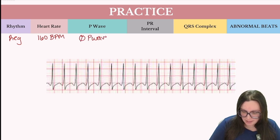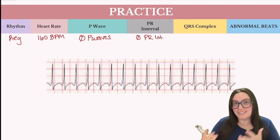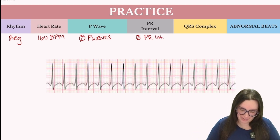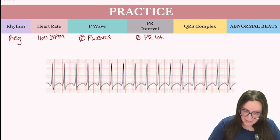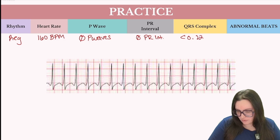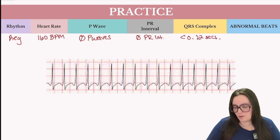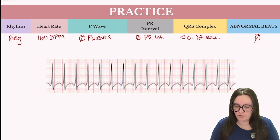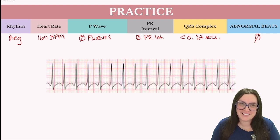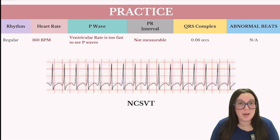Because we don't have P waves, we're also not going to be able to measure our PR interval. Is our QRS complex narrow and normal, or big, wide, and ugly? In this case, it's very, very narrow — less than 0.12 seconds. There are no abnormal or premature beats. Anytime we have a rhythm originating at or above the junction, we're going to see a narrow and normal QRS complex. The correct rhythm is narrow complex supraventricular tachycardia.